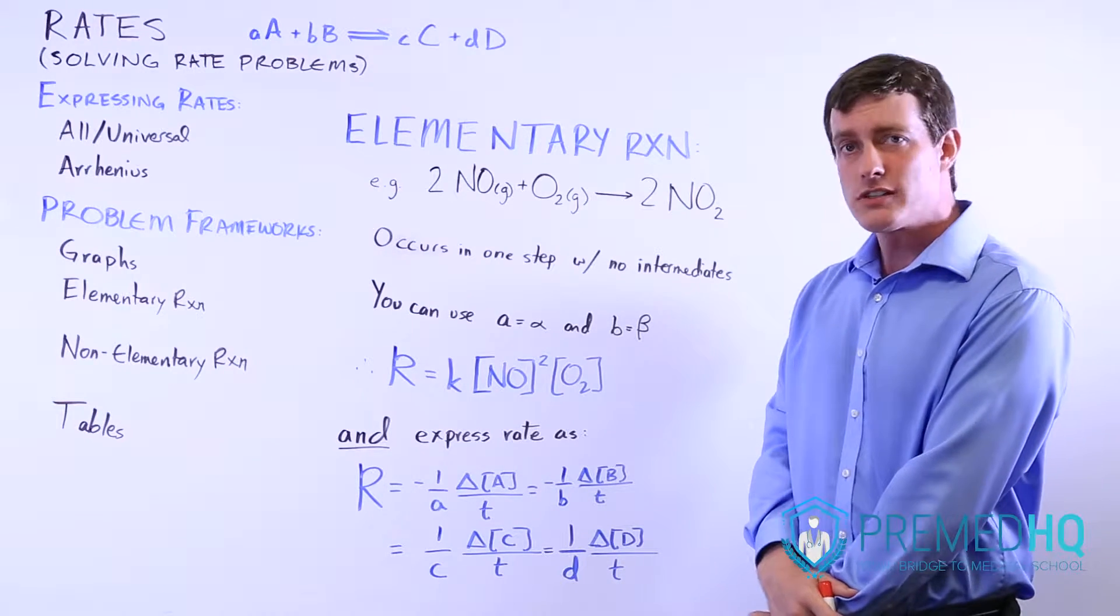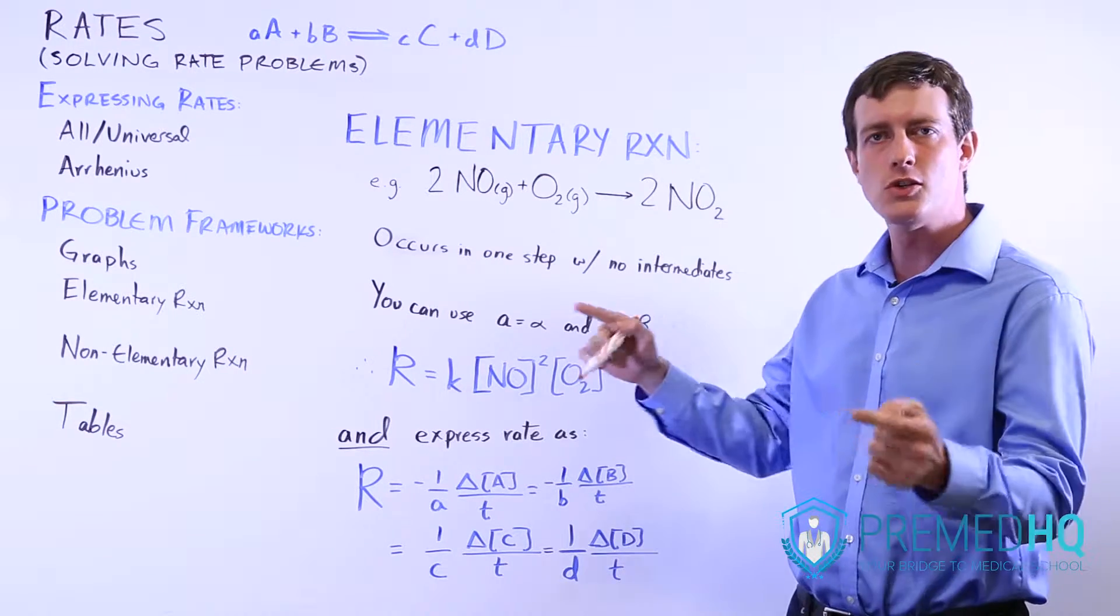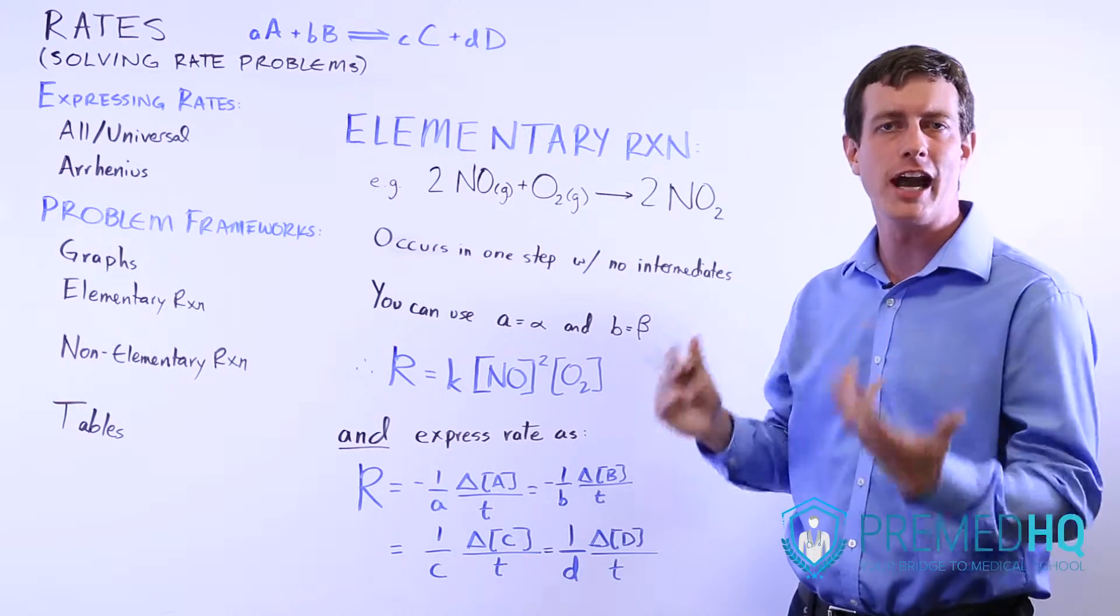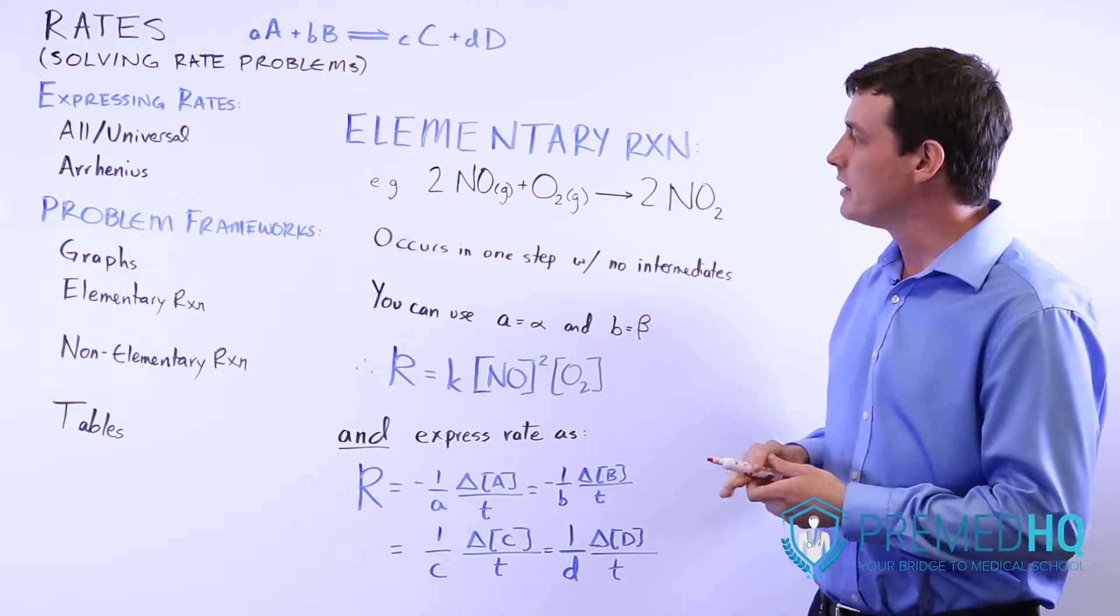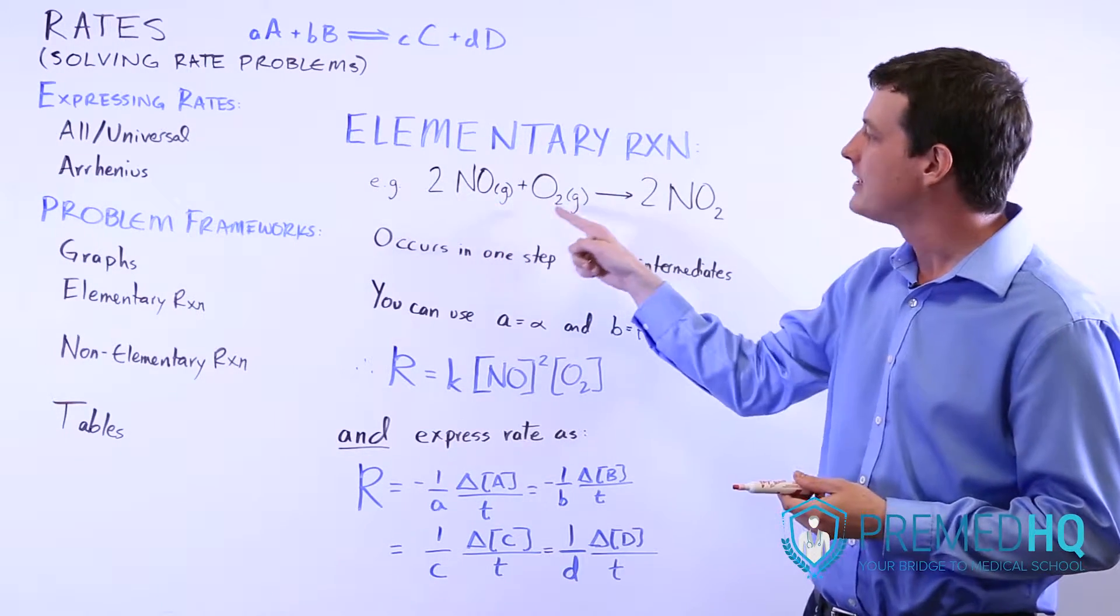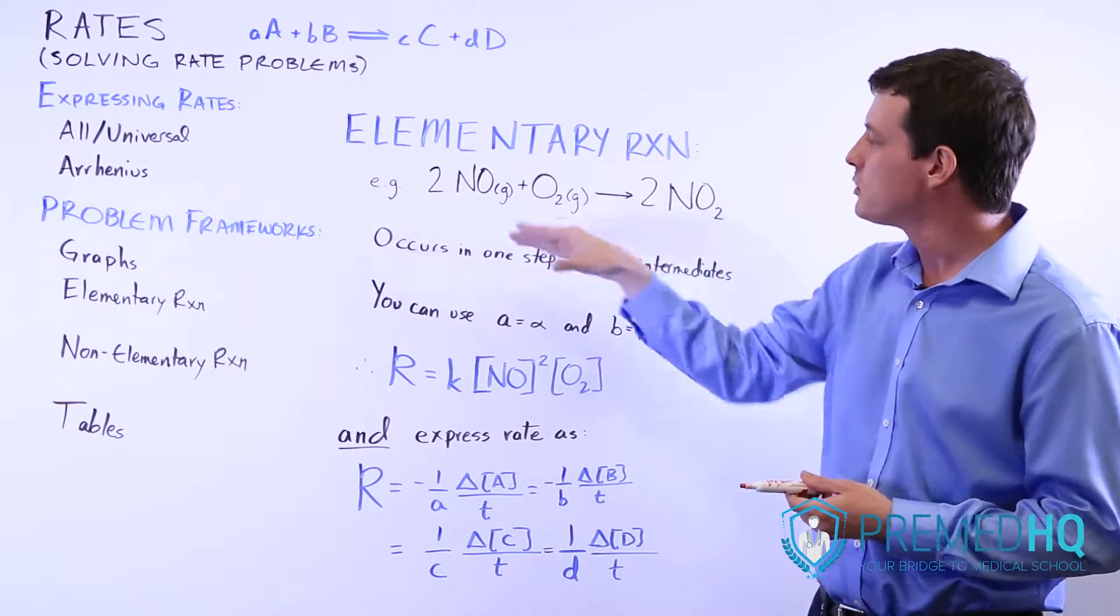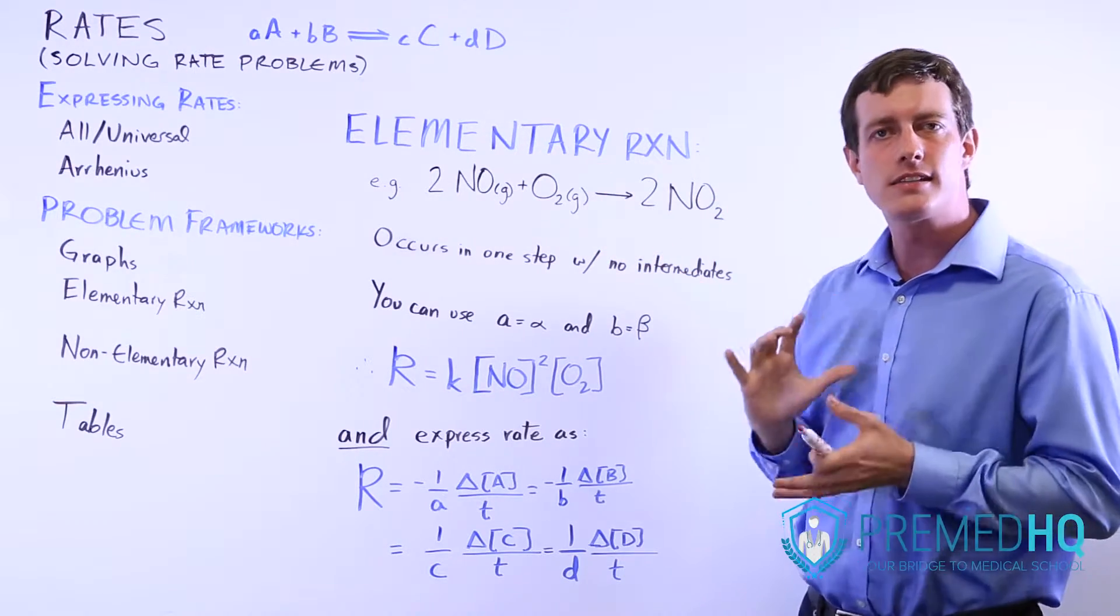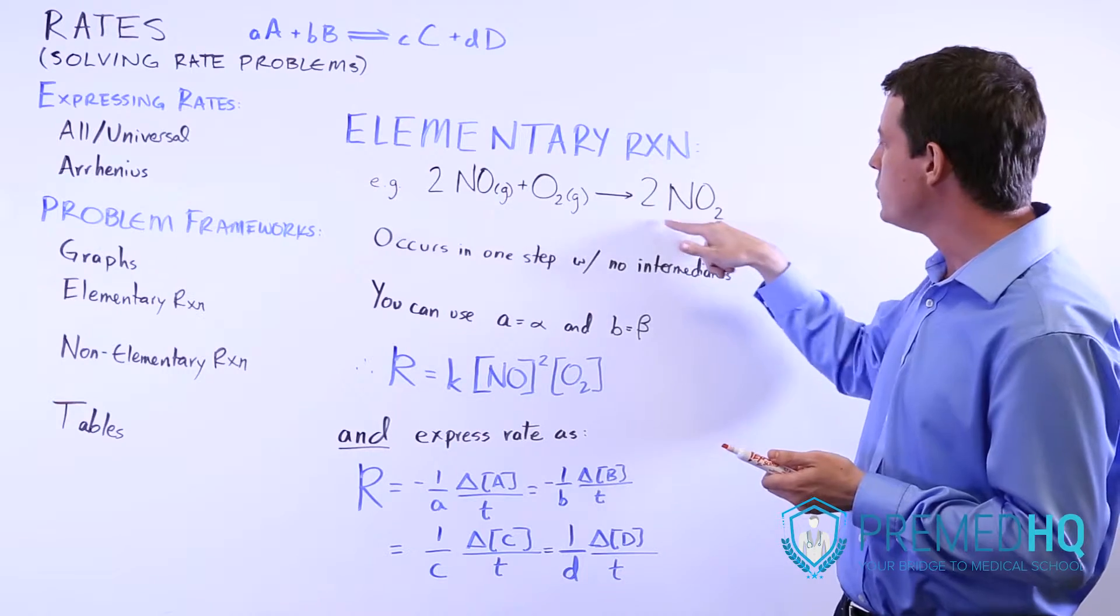Elementary reactions are often straightforward where it's just two molecules colliding with each other and reacting, but they don't always have to be. In this case, we have two NOs and an O2, and those all collide at the same time and form two NO2s.